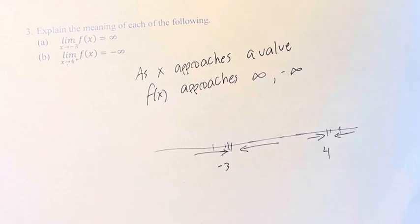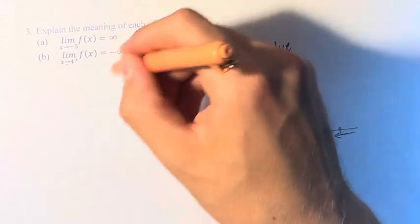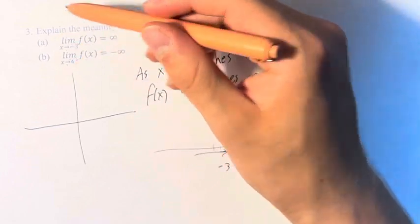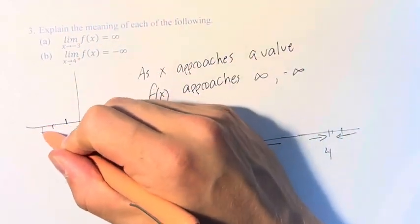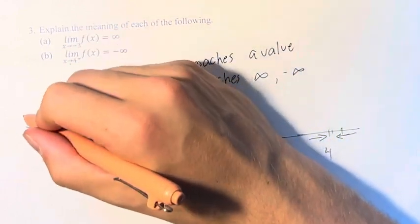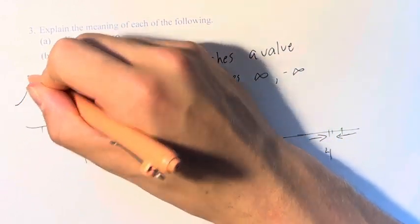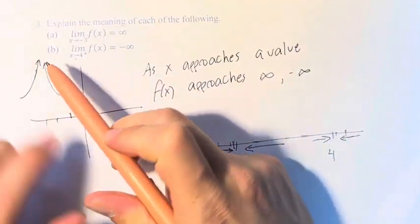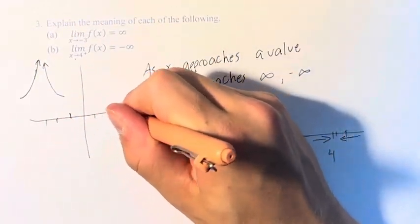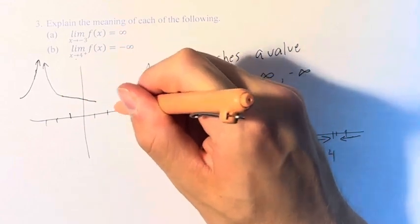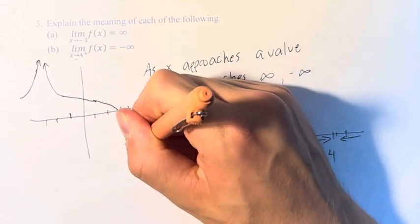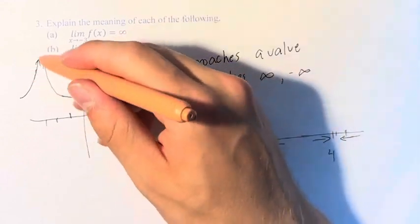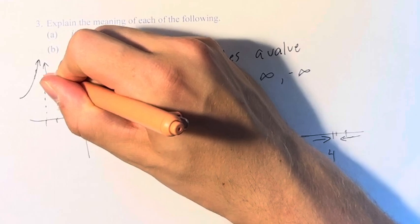It doesn't say anything about what happens if you come from the other direction. An example of what these would look like: if this is one function f of x, at negative 3 the value of the function goes off to infinity from both sides — we're coming at it from both sides and they're both going off to infinity. Meanwhile, at x equals 4, the function goes off to negative infinity, but we don't know anything about it coming from the other side, as opposed to negative 3 where we're looking at it from both sides of this imaginary line.